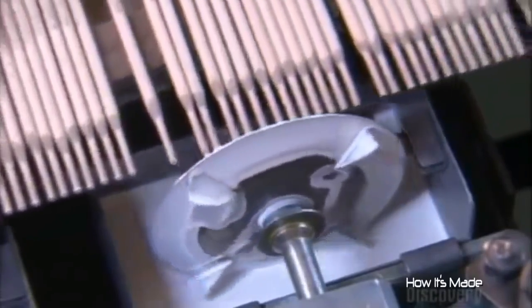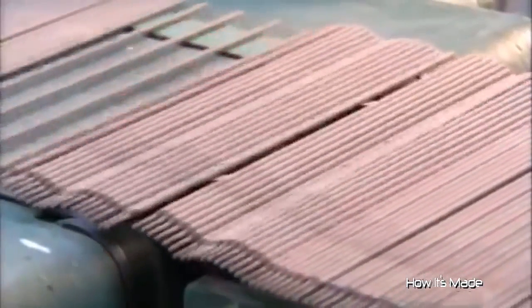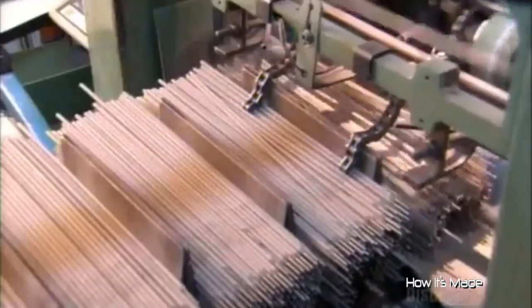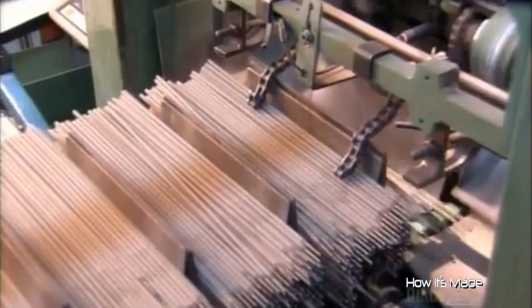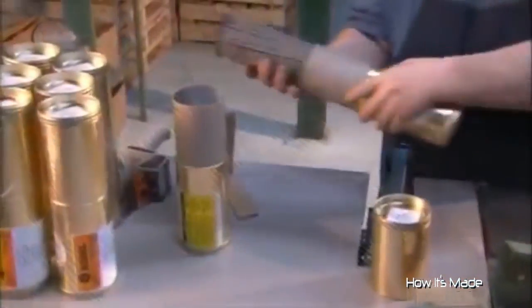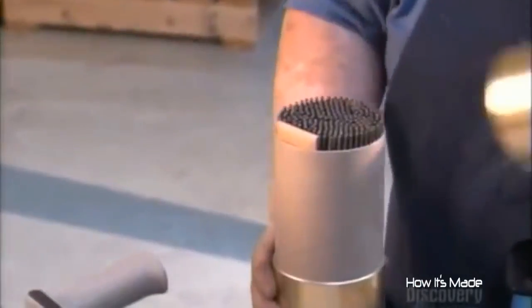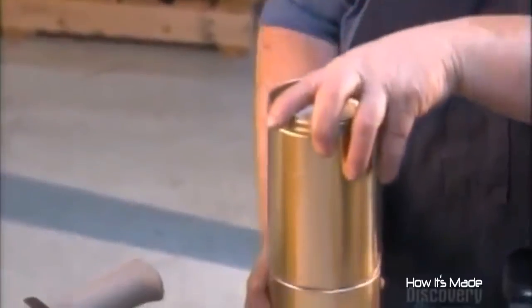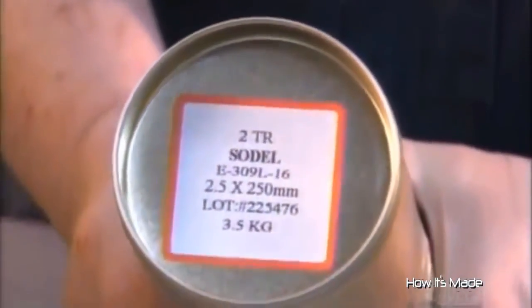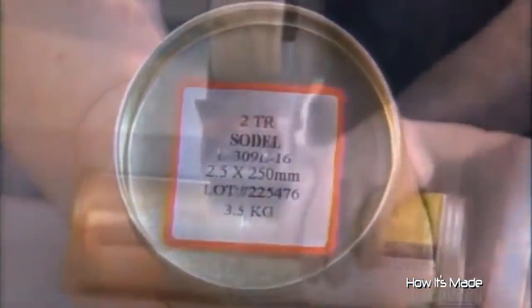From there, it's off to packaging. An optical scanner counts the electrodes, then a stacking machine separates them into three and a half to five kilogram bundles. Finally, a worker inserts them into cardboard canisters. He adds a piece of cardboard to compress them tightly for the trip. A sticker marks the contents and tape keeps the package tightly sealed.